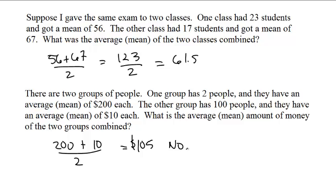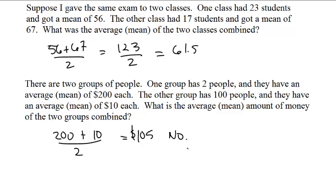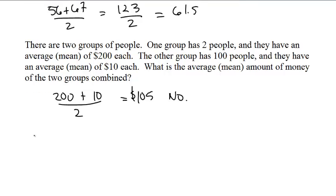If two people have an average of $200, the first group has 2 times 200, which is $400 total.